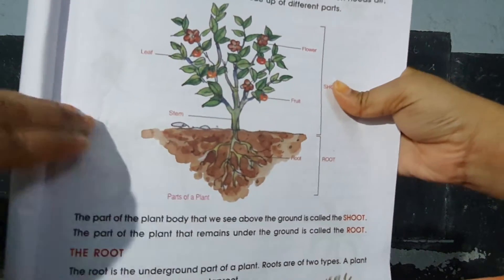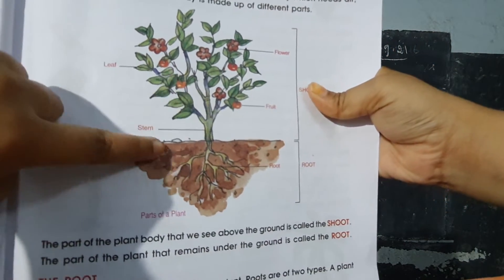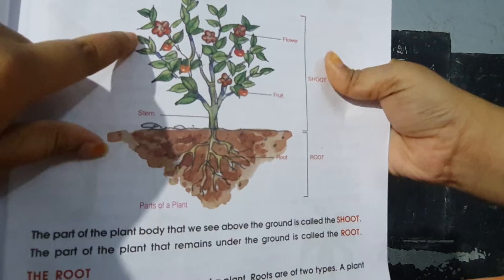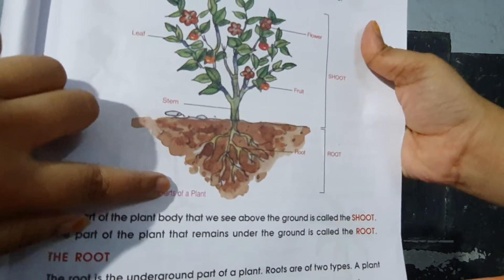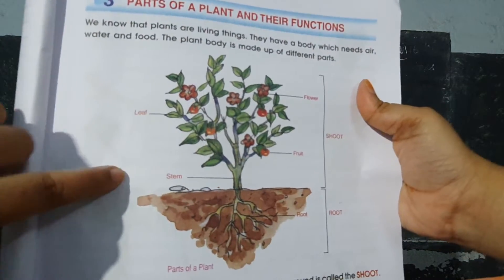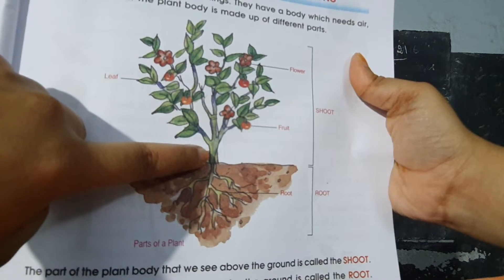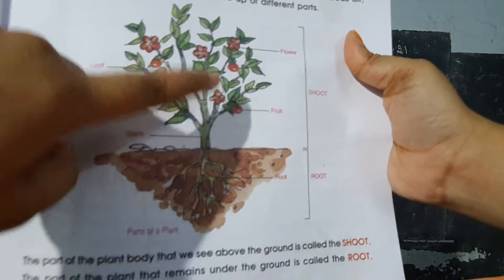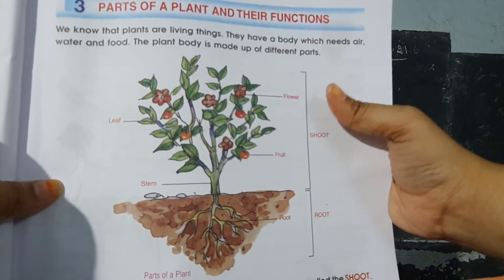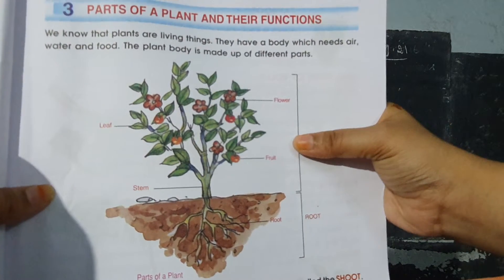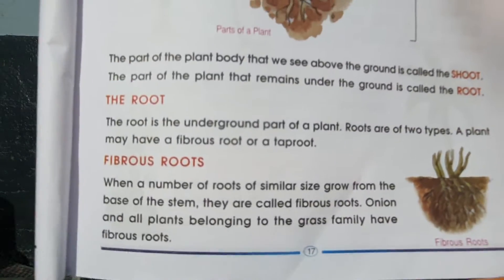The part above the ground is shoot, and below the ground is root. Plants have leaves, flowers, stem, and fruit — these are the parts of plants. Draw this diagram in your classwork; it is on page number 17.